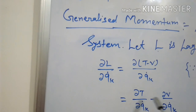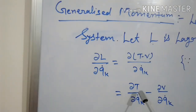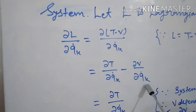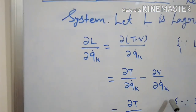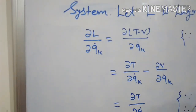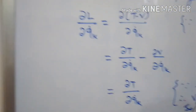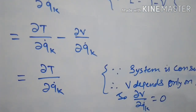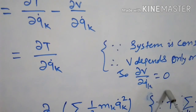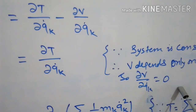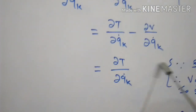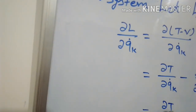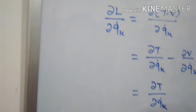This equals del T upon del QK dot minus del V upon del QK dot. Now, since the system is conservative, V depends only on position. That means del V upon del QK dot is equal to zero, so this term will be zero and the remaining term is del T upon del QK dot.